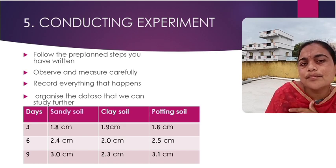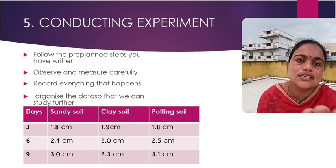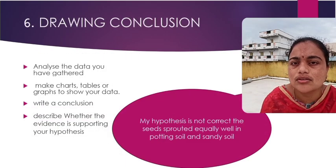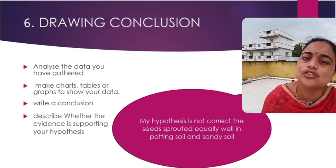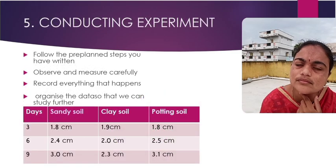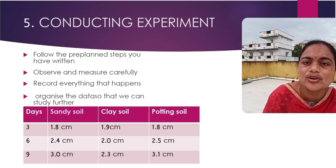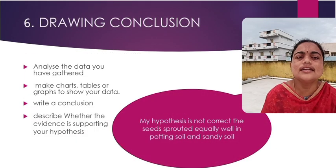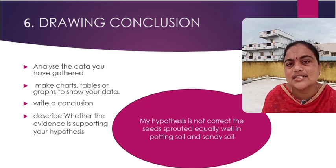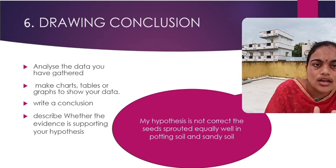My hypothesis was that potting soil is best for planting bean seeds. Now the next step is analyzing that data. After observing, we have seen that bean sprouts are growing well in both sandy soil and potting soil. So my hypothesis is not entirely correct, because bean seeds are growing best in sandy soil as well as potting soil. We are analyzing this data and gathering a conclusion.